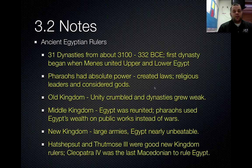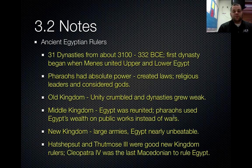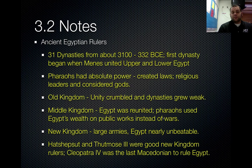Egypt's history is divided into three different kingdoms. The Old Kingdom is when Menes and his family ruled Egypt, but eventually the unity crumbled and the dynasties grew weak. This was a time when Nubia conquered them. During the Middle Kingdom, Egypt was reunited and the pharaohs focused more of Egypt's wealth on public works instead of wars — similar to the Mesopotamians, who thrived by investing in irrigation systems and safe housing for their people.